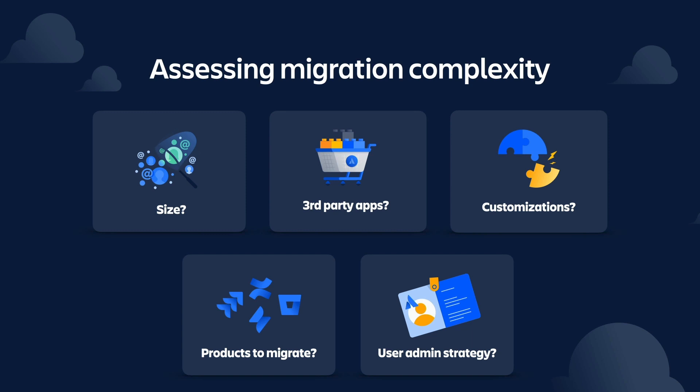Consider your size — this includes the number of users that you have and the overall data currently used by your on-premise instance. For apps, understand how many apps you're using and how critical they are. Do they have cloud versions already? Does Atlassian's cloud platform natively possess features that you're currently using a paid app for? Will you be looking for a replacement or moving on without it? The app assessment done in phase one using the migration assistant can really help inform how your app landscape will impact your migration's complexity.